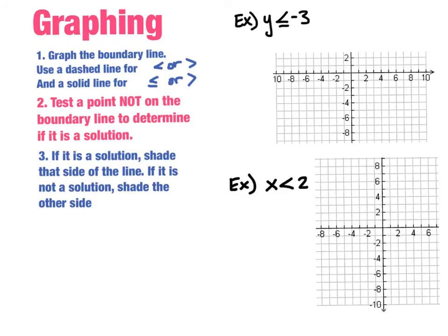When graphing linear inequalities, there are three main steps. The first is to graph the boundary line using our graphing linear equations rules. The only difference is we use a dashed line if we have a strict less than or greater than, and a solid line if we have a less than or equal to or a greater than or equal to.